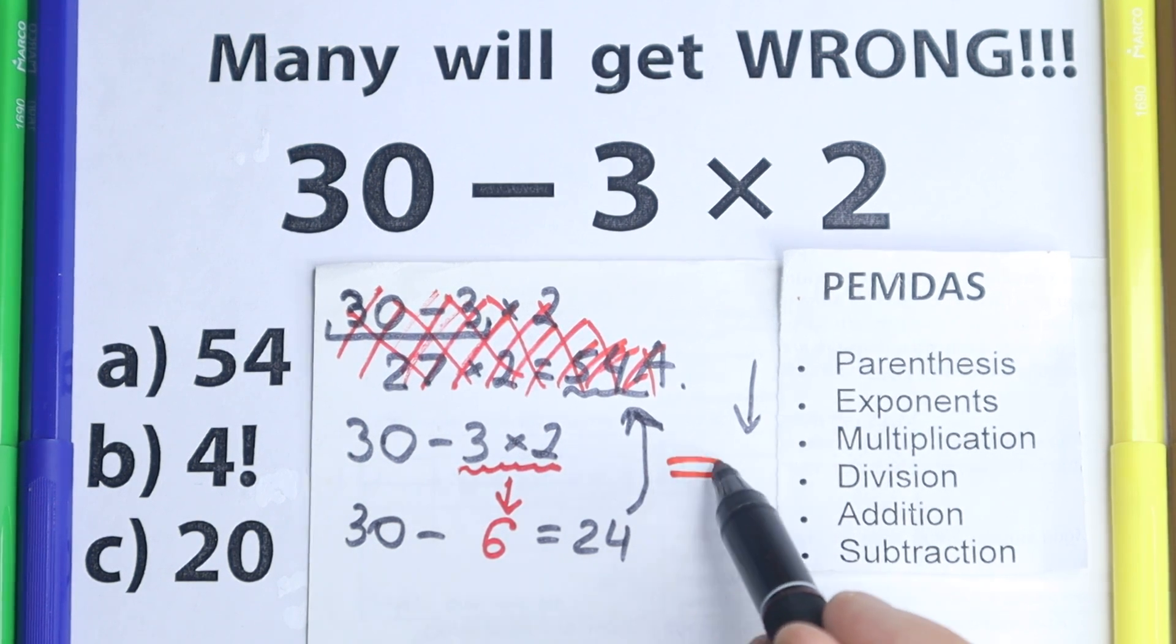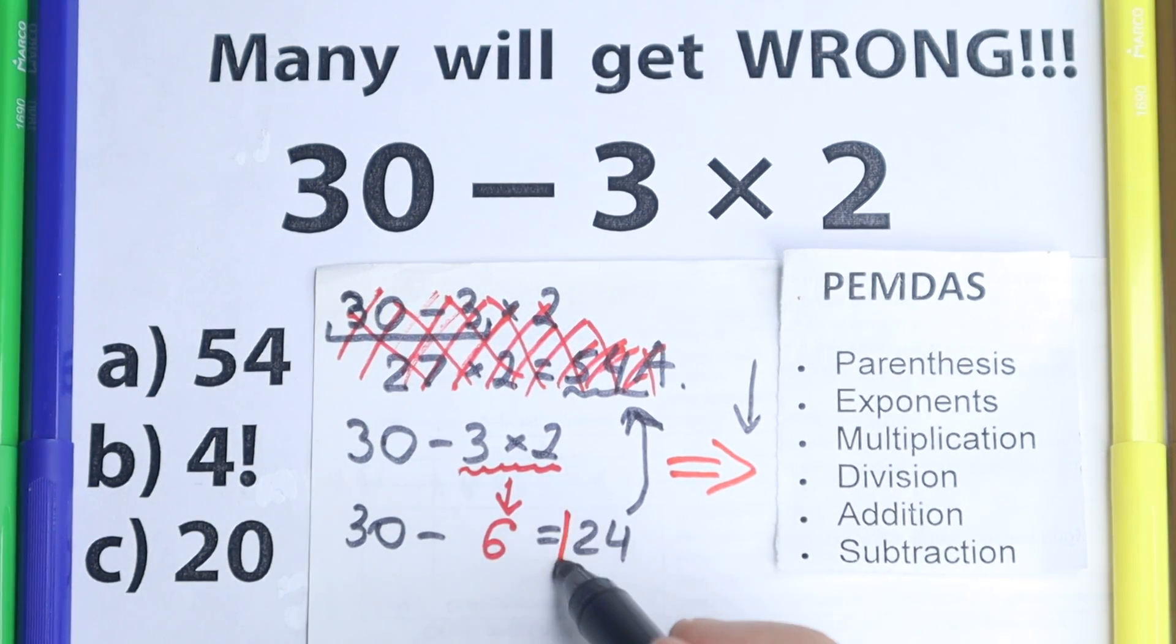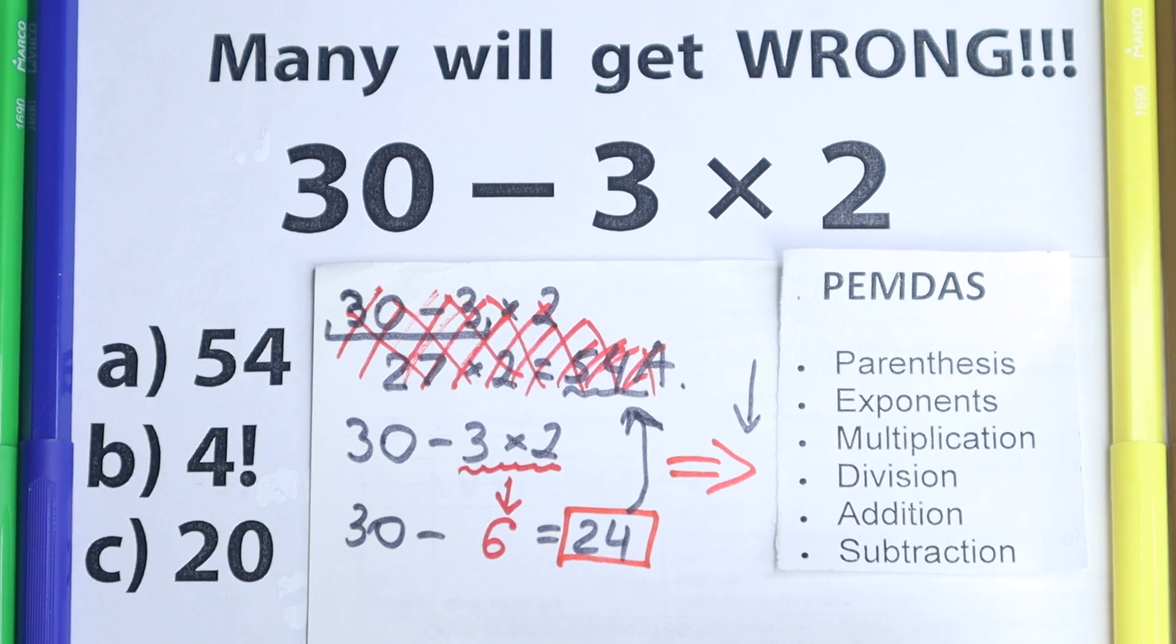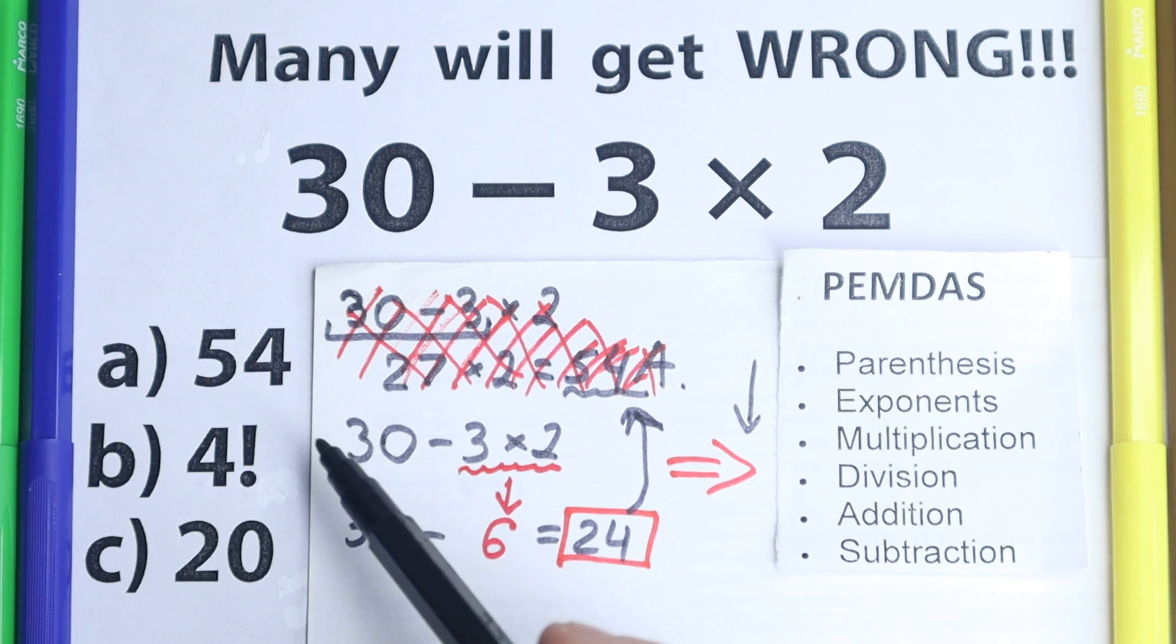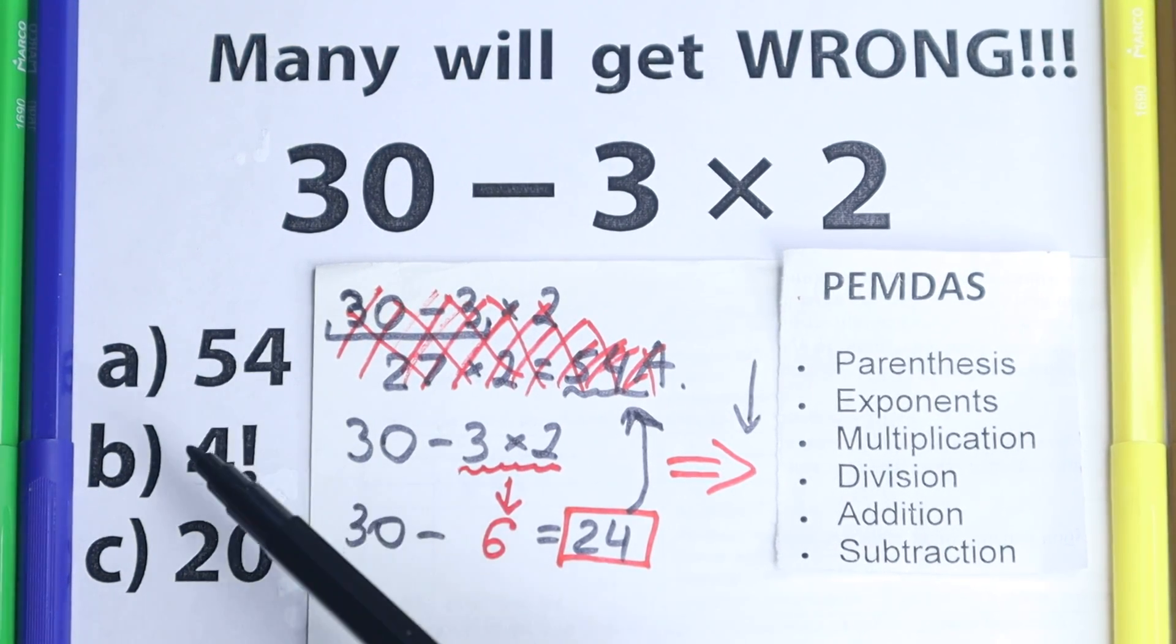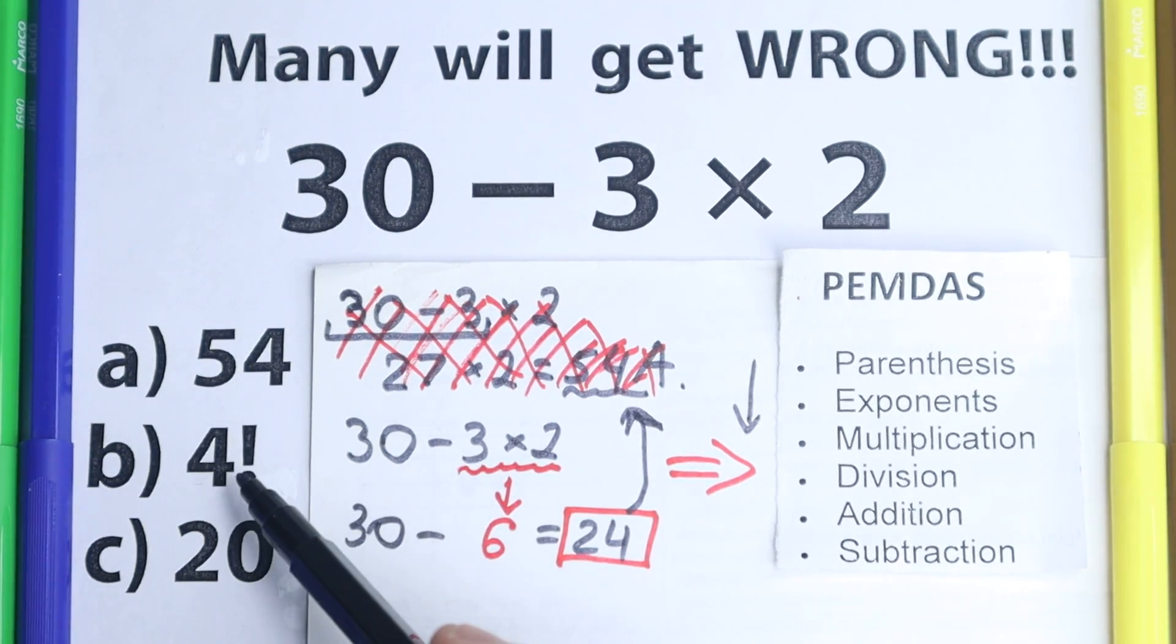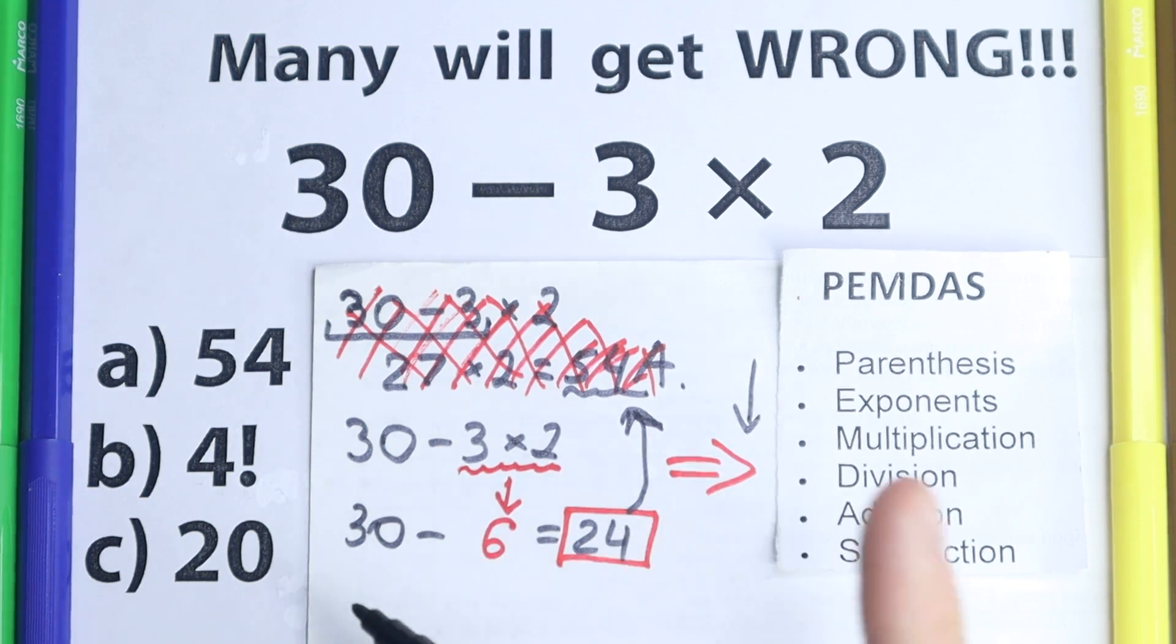And the correct solution according to PEMDAS is 24. But we need to choose one option right here. What is the correct answer? Let's look at it. We have option A, B, and C. 24 right here, we don't have it, we don't have it in option C. But what about this 4 factorial? We still have one option. Let's look at it. Maybe this is the same as 24.